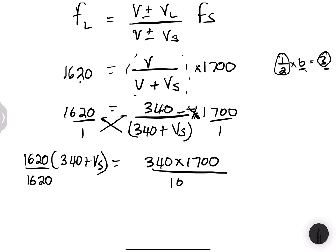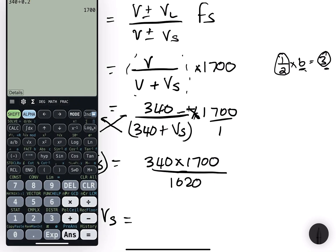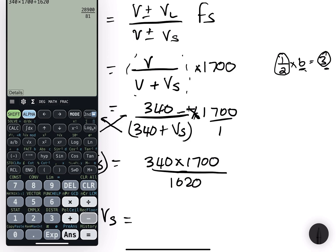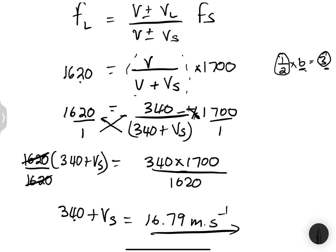Let's make this as easy as possible for ourselves. I'm going to multiply those numerators together. So I've got 340 multiplied by 1,700, and I'm going to cross multiply. So which means that I'll have 1,620 into 340 plus VS. So we'll divide by 1,620. But what I do on the left, I'll do on the right. So I've got 340 plus VS is equal to, now let's work that out. That's 340 multiplied by 1,700 divided by 1,620, and I get an answer there. And now I'm going to take that 340 and subtract from that answer. So let's subtract 340, and I get an answer there, which is 16.79 meters per second. And that would be the speed at which the bird is flying.